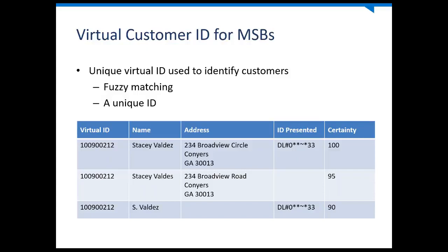Why is it important to uniquely identify these customers? If you want to submit regulator reports — for example, to report structuring transactions — if customer A walks in and splits a transaction into five different transactions across different agents, you need to identify customer A across all five transactions to see that the aggregate amount exceeded the threshold. In that situation, you would be required to submit a currency transaction report or a threshold transaction report.